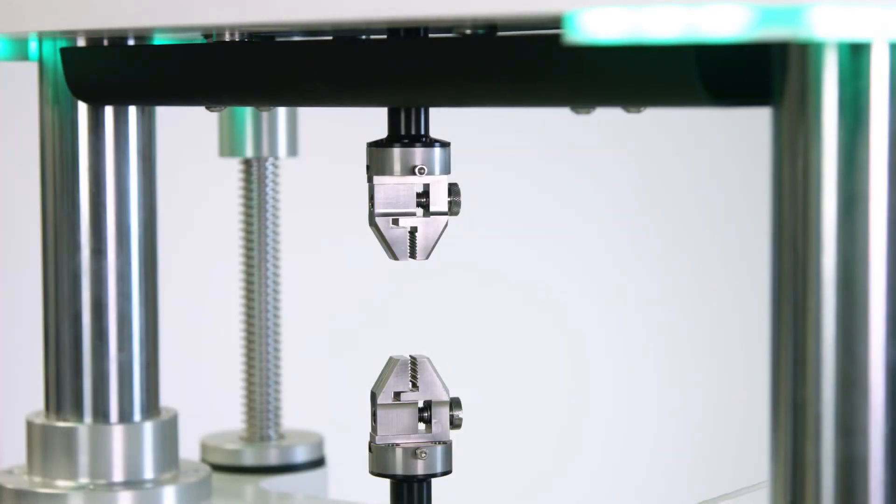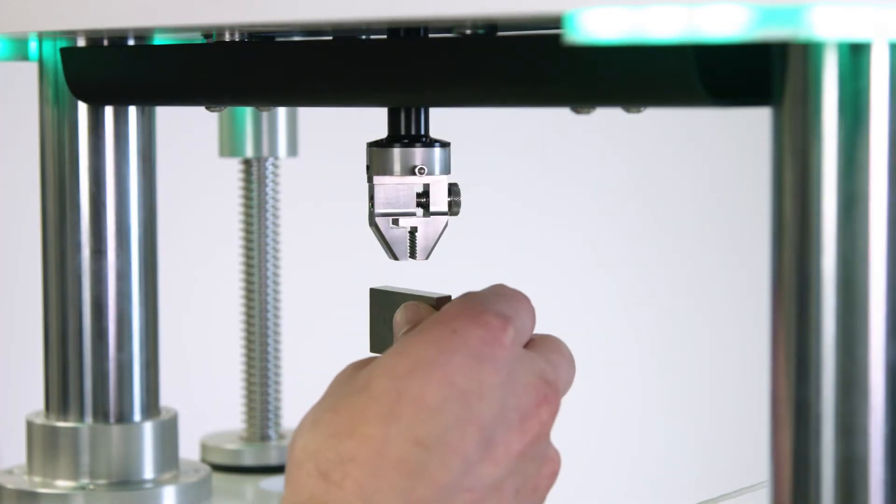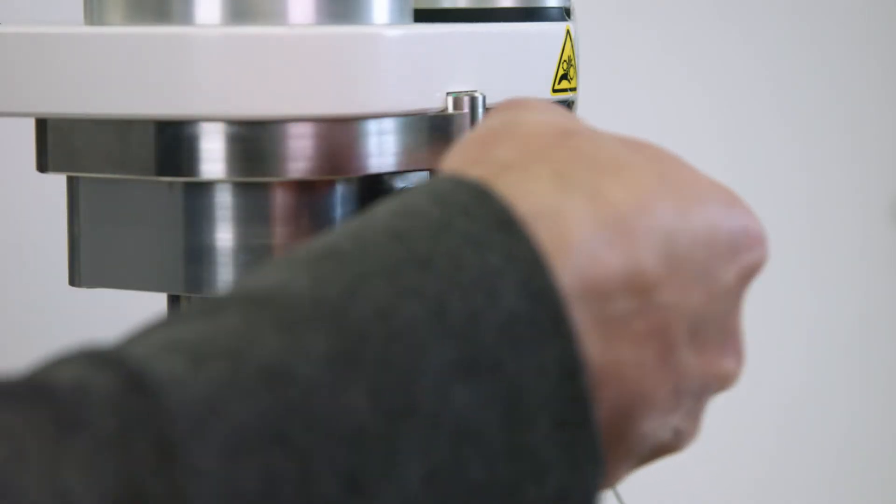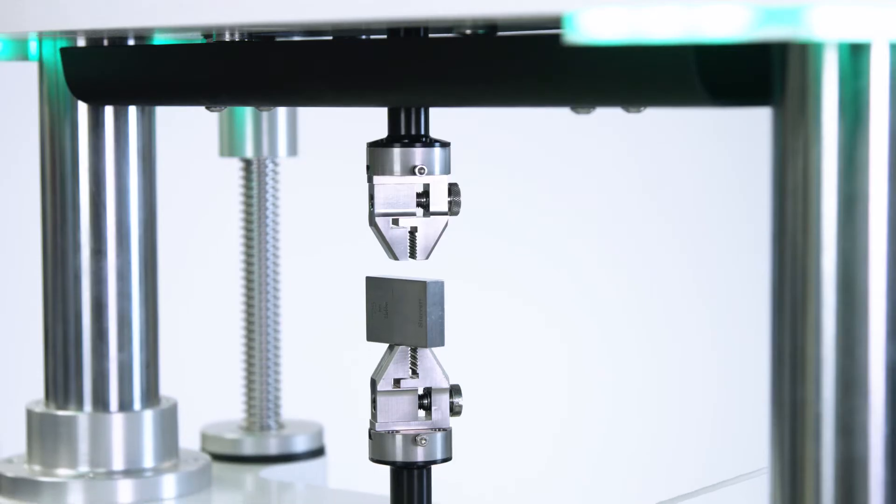I can use a gauge block to provide a known measured reference length to the software. I insert the gauge block between my grips and move this close to the position of the upper grip.